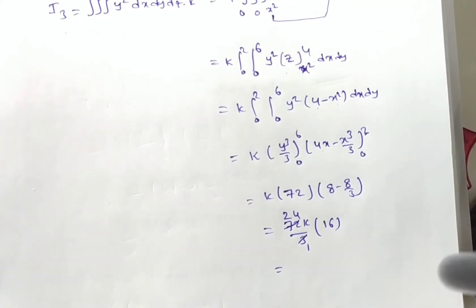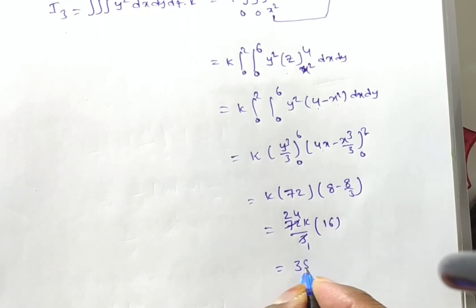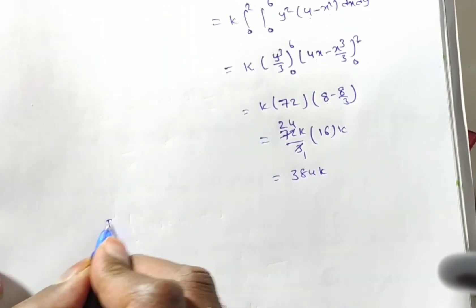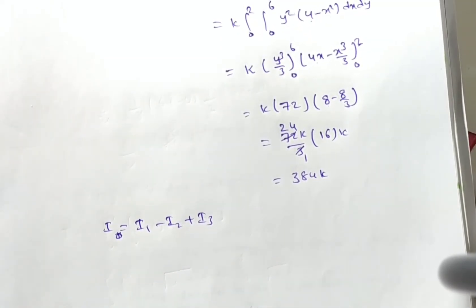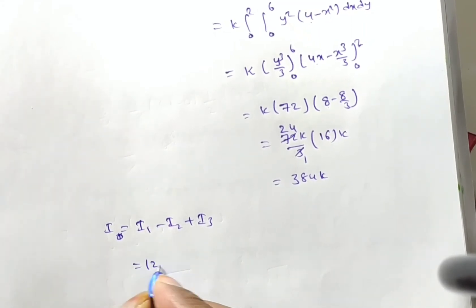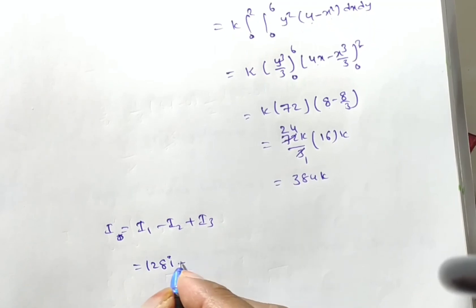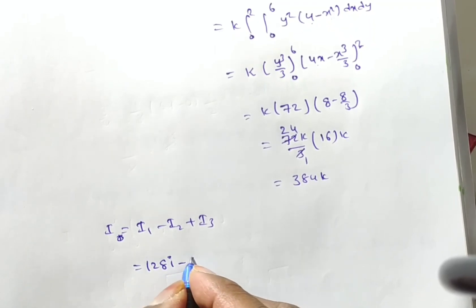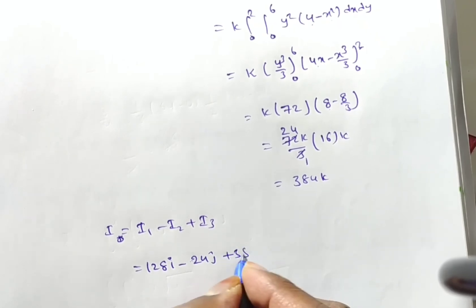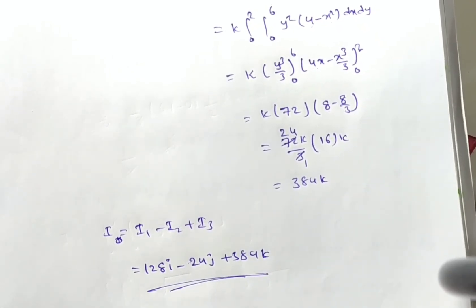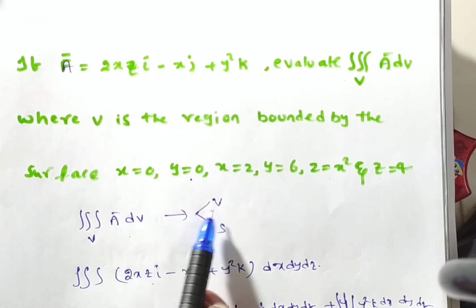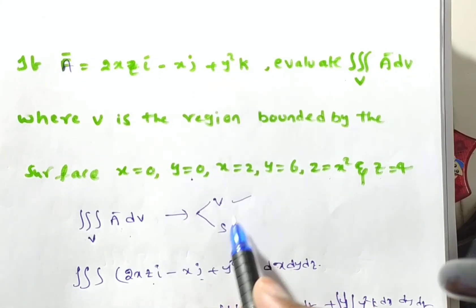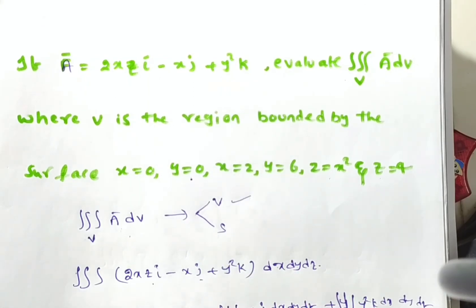So the final answer is I = I1 minus I2 plus I3 = 128i minus 24j plus 384k. Friends, as you can see, the result is a vector. How many of you guessed that the answer would be a vector? Please write in the comment box. Thank you for watching this video.